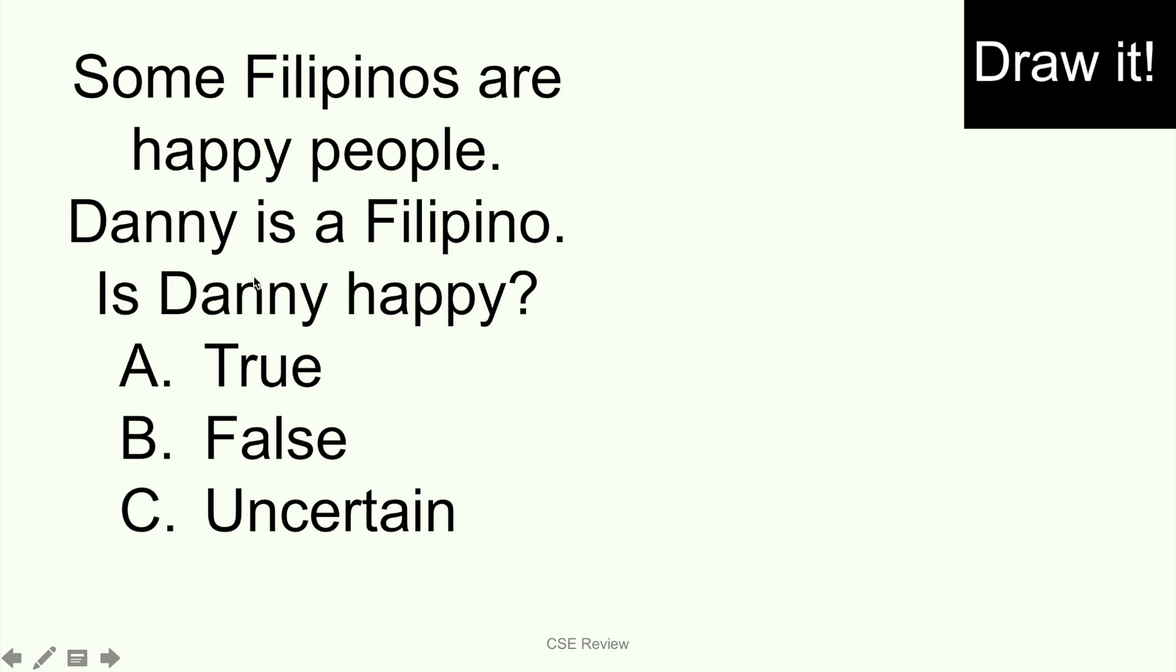Now, alright, so let's try to answer the question using the diagram. So sabi, some Filipinos are happy people, Danny is a Filipino, is Danny happy? So kung drawing natin yung some Filipinos are happy people, ito yung first line natin. Ang itsura niya, then diagram, some Filipinos are happy people. Again, palitan ko yung color just so you would see. Some Filipinos are happy people. Okay? Ano ibig sabihin nun? Itong gitna na to, happy na sila, Filipino pa sila. Okay? Yan. Nandiyan yan both.